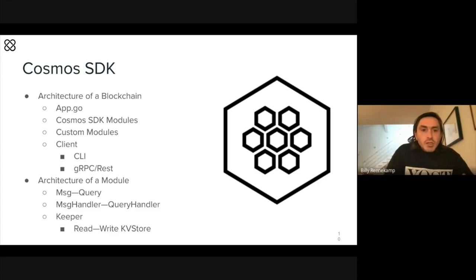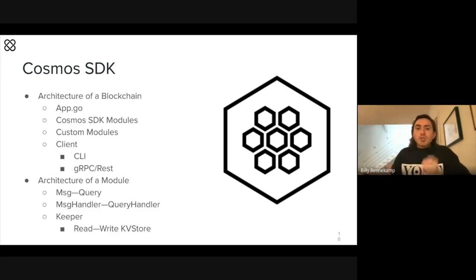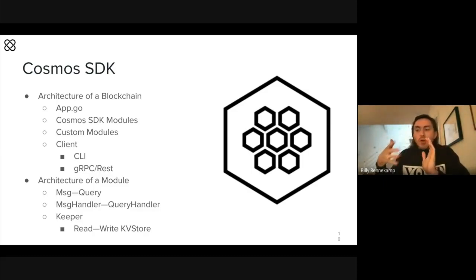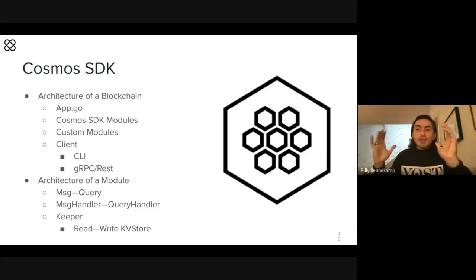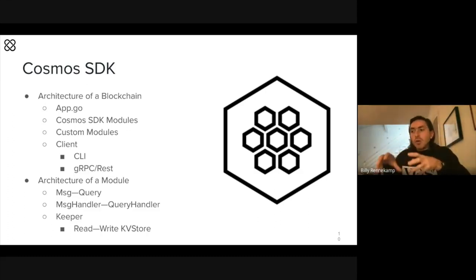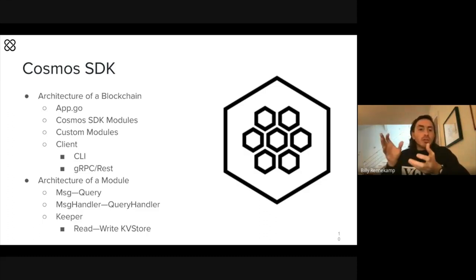The architecture of a blockchain in the Cosmos SDK: there's essentially an app.go file, which is your home file that lists all of the modules and features you want inside that blockchain — that's where they're all tied together. You're mostly importing your standard modules, and then you might import one or more custom modules. Those are usually defined in the same codebase under the folder 'x', where you have the meat and potatoes of what this blockchain does differently from all the other blockchains out there.